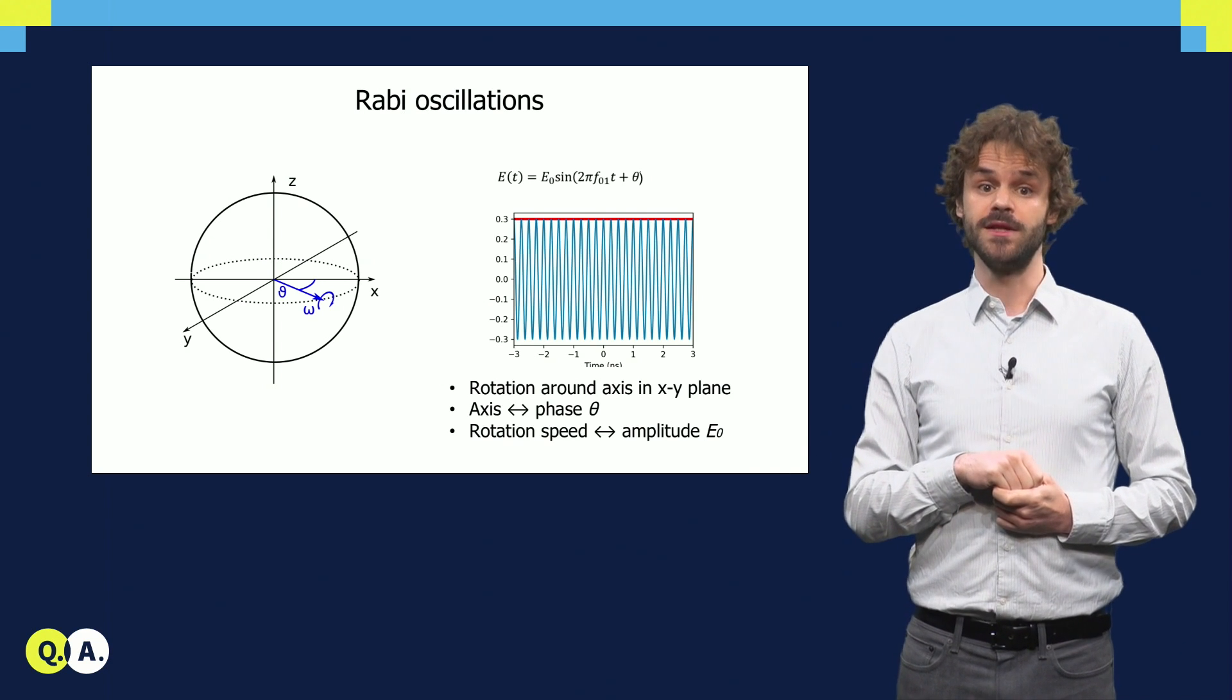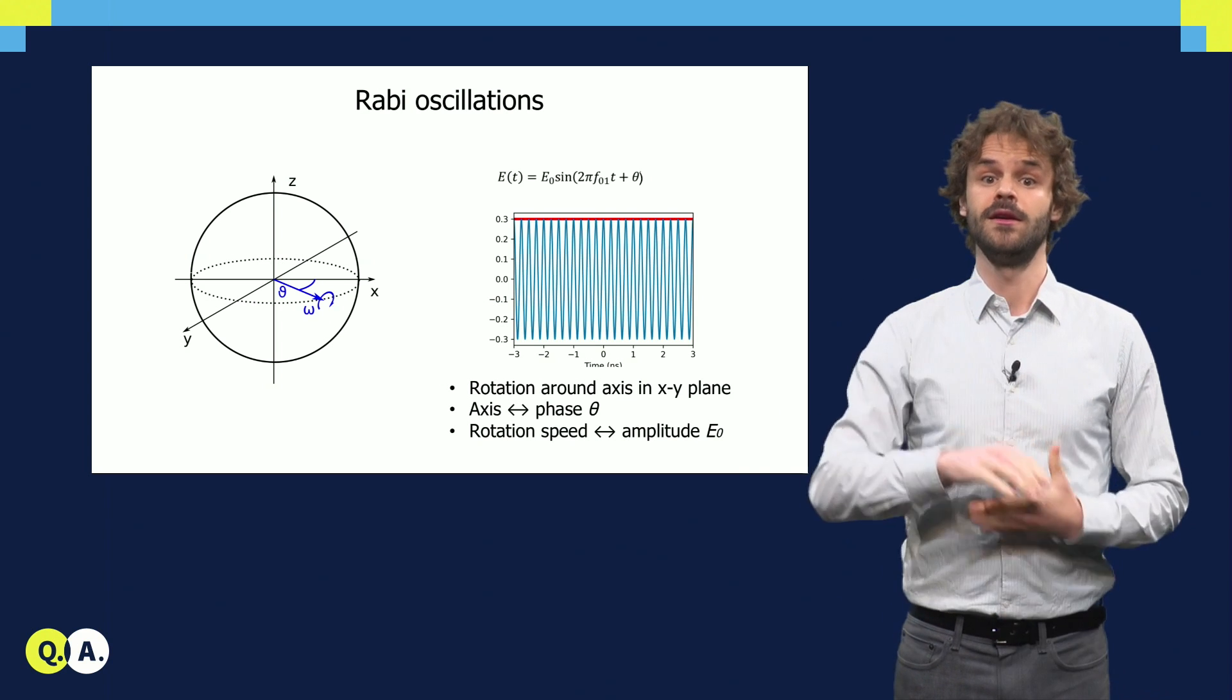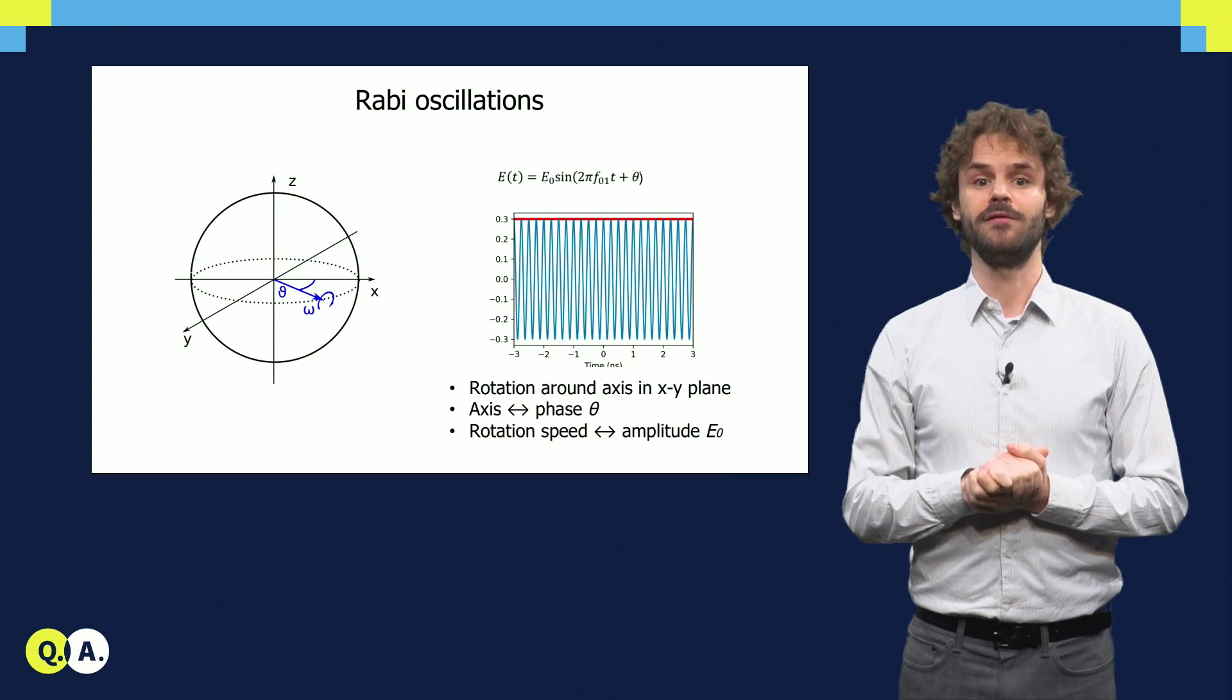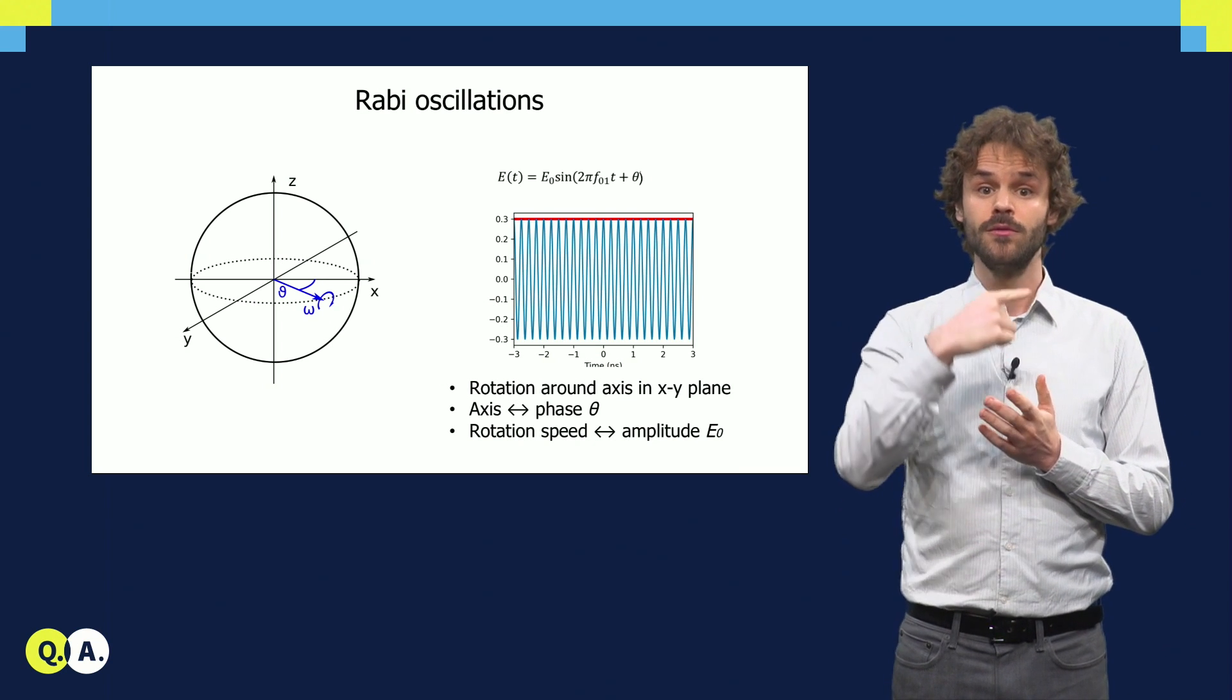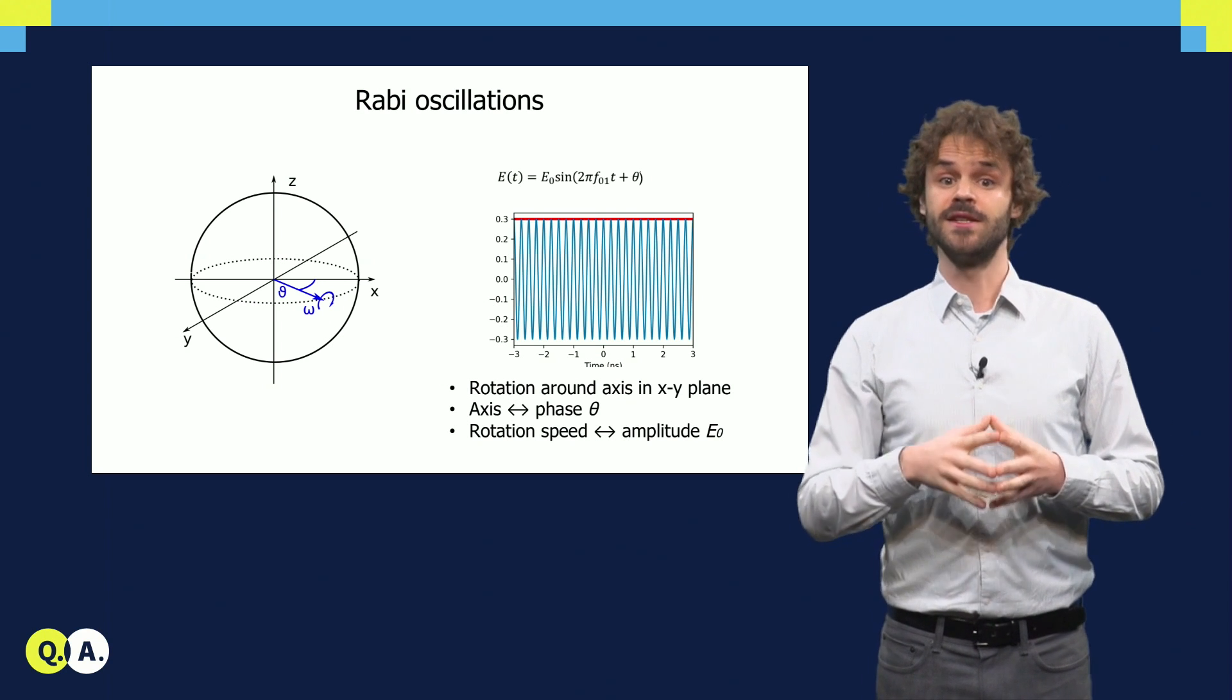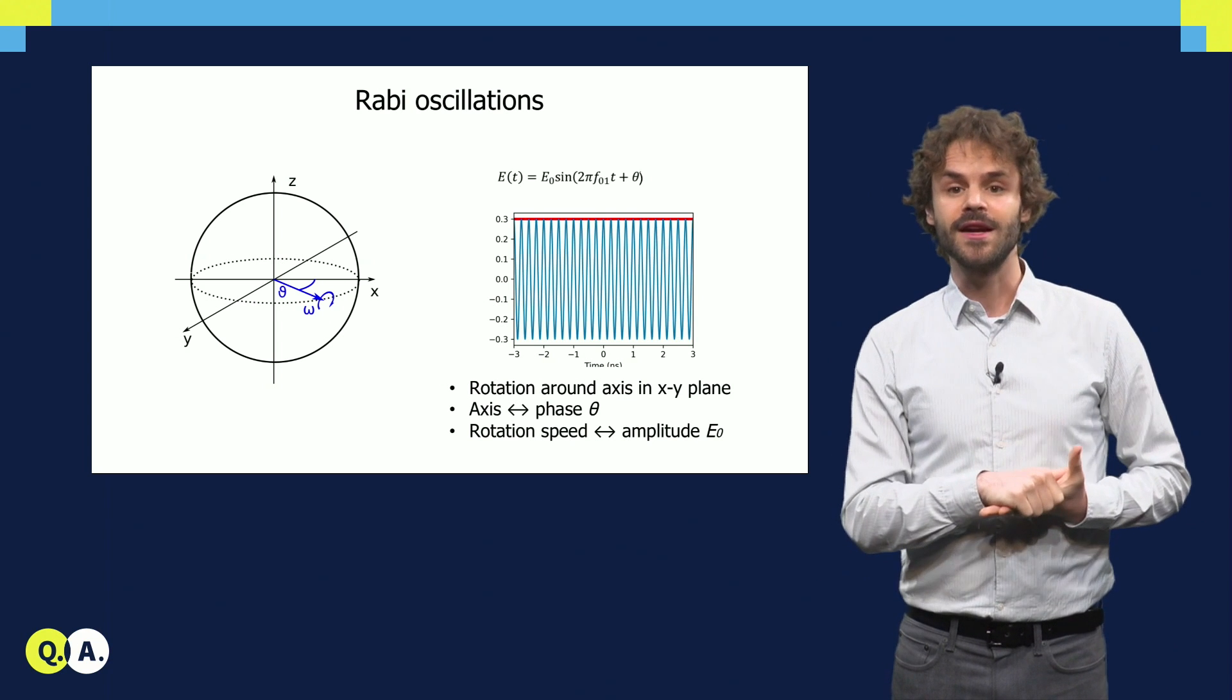On the Bloch sphere, this looks like a rotation with constant speed. The axis of rotation always lies in the xy-plane. We can control where exactly it lies by changing the phase of the applied field. A sine wave leads to a rotation around the x-axis, while a cosine with 90 degrees phase offset will produce rotation around the y-axis. On the other hand, the speed of the rotation is proportional to the amplitude of the electric field.